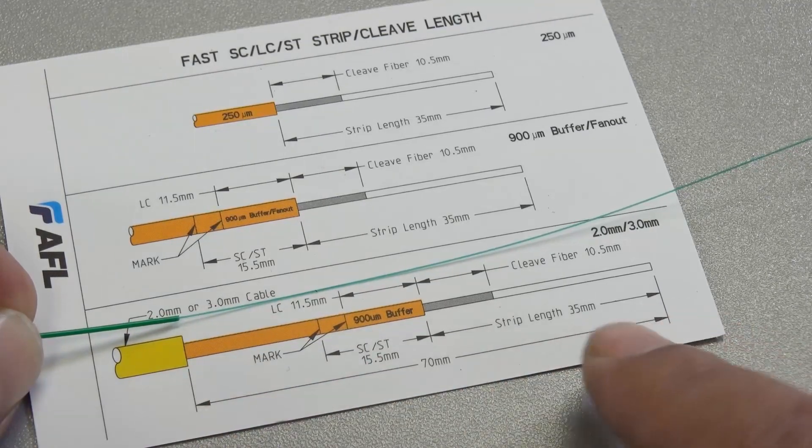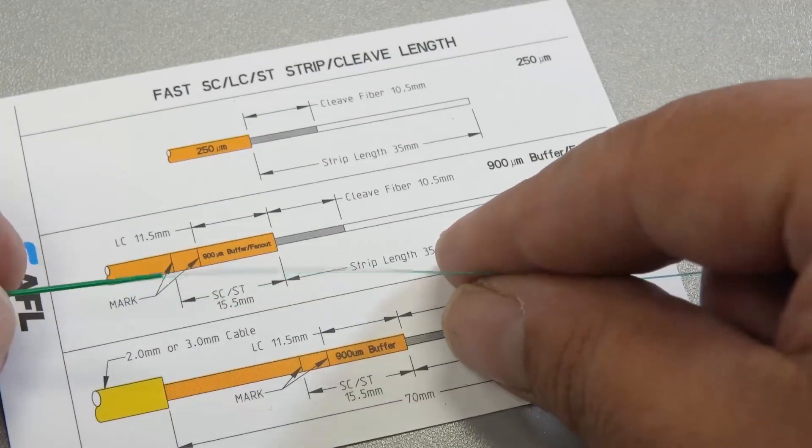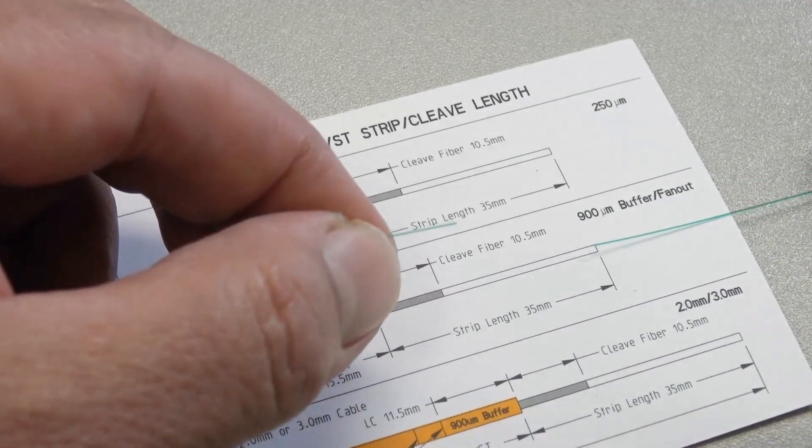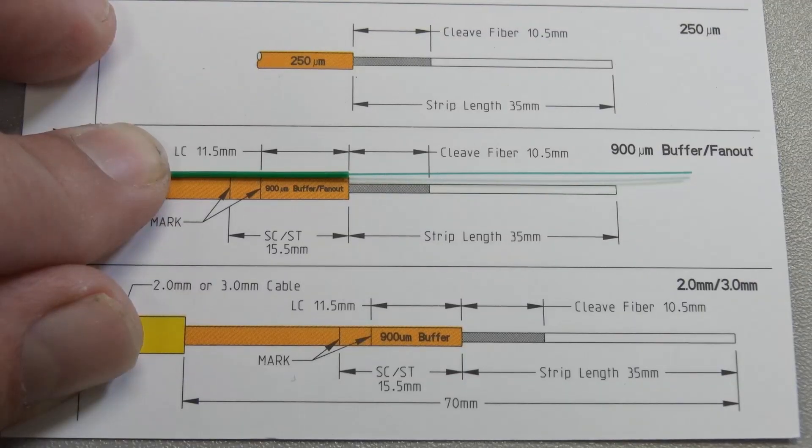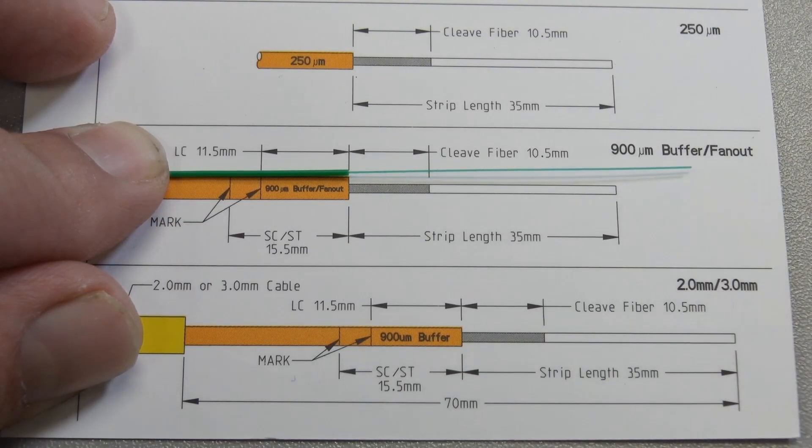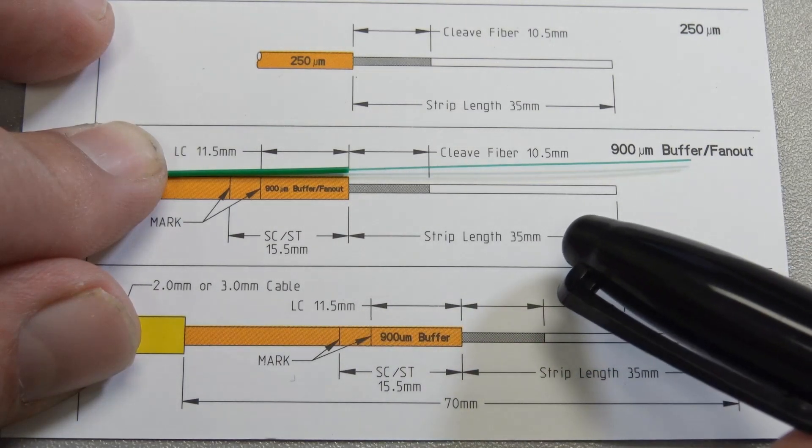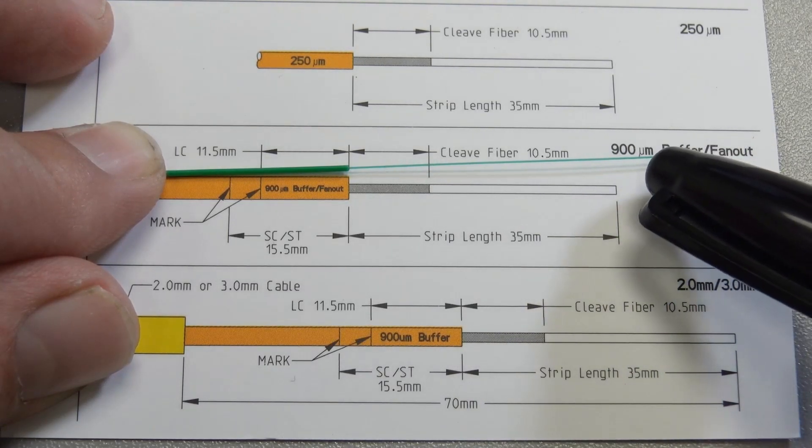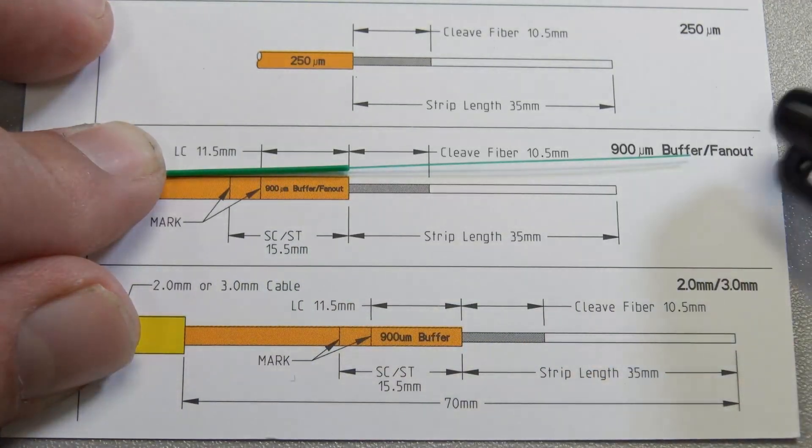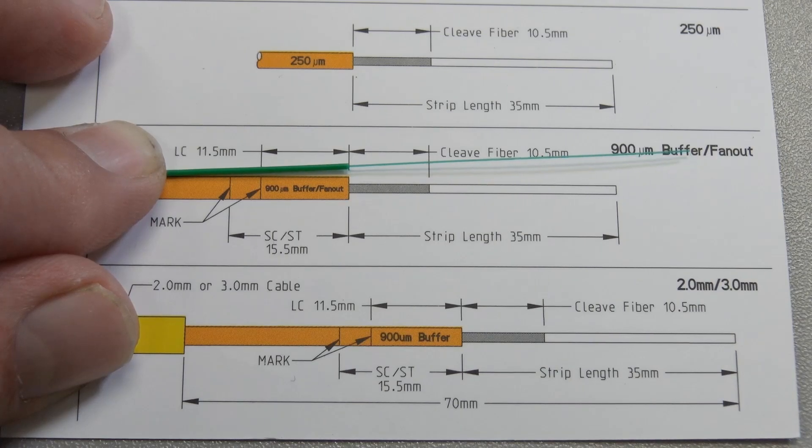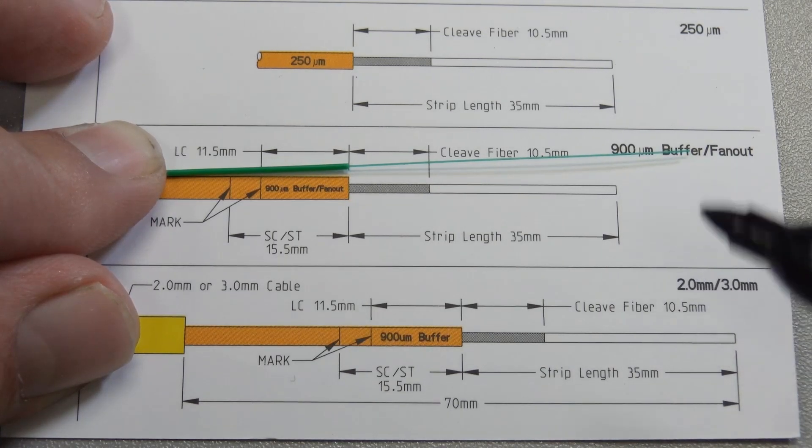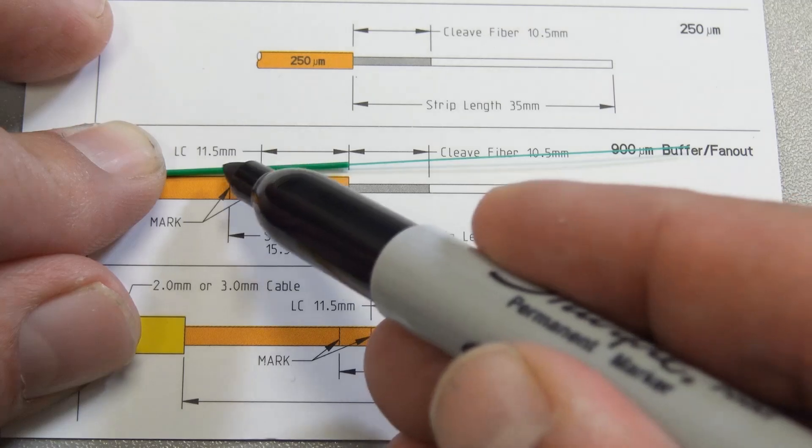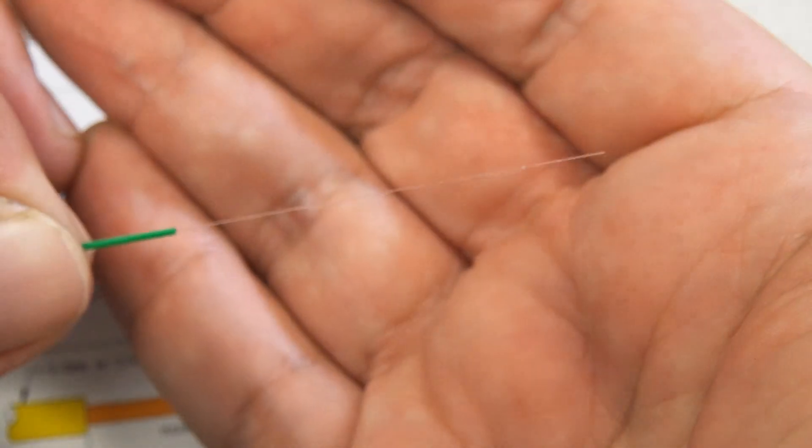Once you have your fiber, the strip length here is 35 millimeters—that's the minimum. You don't have to be exact; if you have a little more, you're cool. This is for 900 micron, the size of the fan out. Another thing you might want to do when you first start terminating these connectors: since we're doing an SC connector today, there's a mark right here for SC to ST. We're going to mark it right there, and I'll show you why in a little bit.